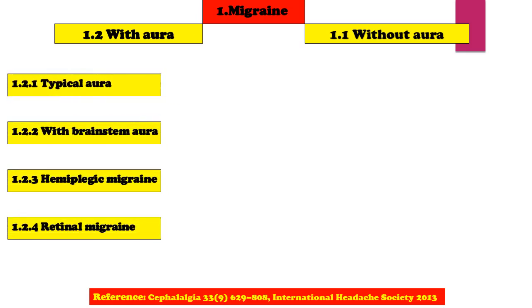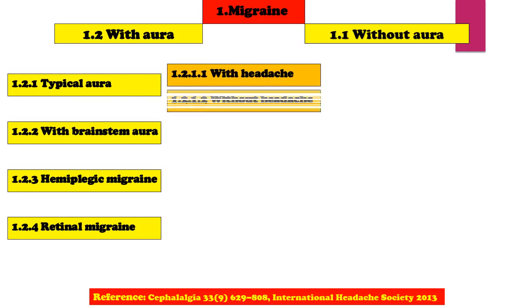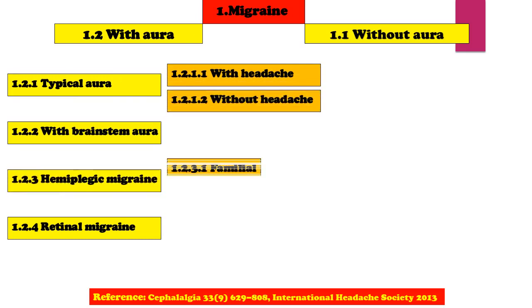Migraine with Typical Aura is further classified into With Headache and Without Headache. Hemiplegic Migraine is classified into Familial Hemiplegic Migraine and Sporadic Hemiplegic Migraine.